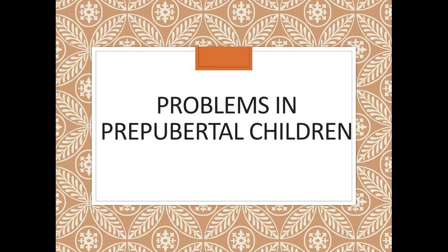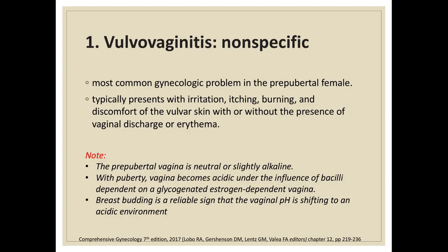The most common gynecologic problem among pre-pubertal children is nonspecific vulvovaginitis, which typically presents with irritation, itching, burning, and discomfort of the vulvar skin with or without vaginal discharge or erythema. The pre-pubertal vagina is usually neutral or slightly alkaline. With puberty, the vagina becomes acidic under the influence of bacilli dependent on a glycogenated, estrogen-dependent environment. Breast budding is a reliable sign that the vaginal pH is shifting to an acidic environment.